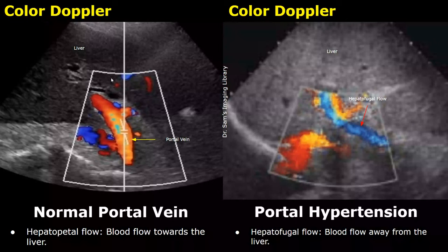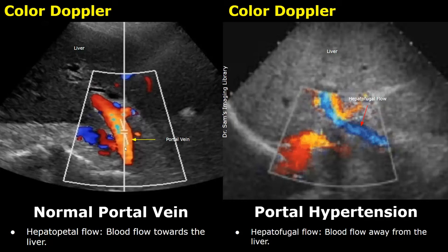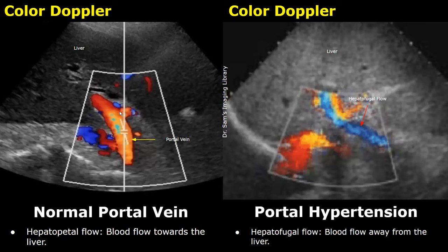This is an image of a normal portal vein with color Doppler applied. The red color indicates that the flow is towards the probe, and this is the liver, so the blood is flowing towards the liver. This flow is called hepatopetal flow and it is seen in normal portal veins.